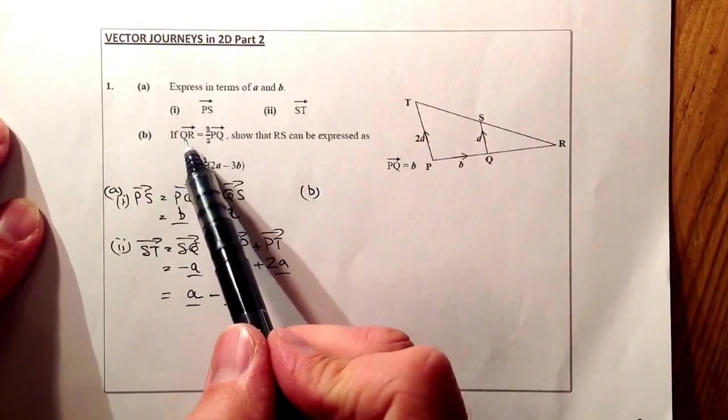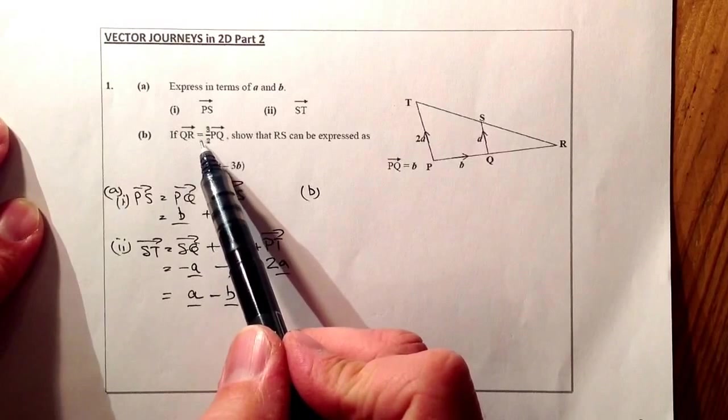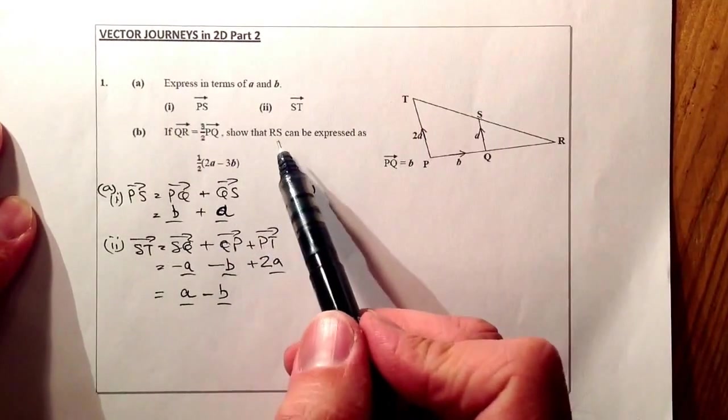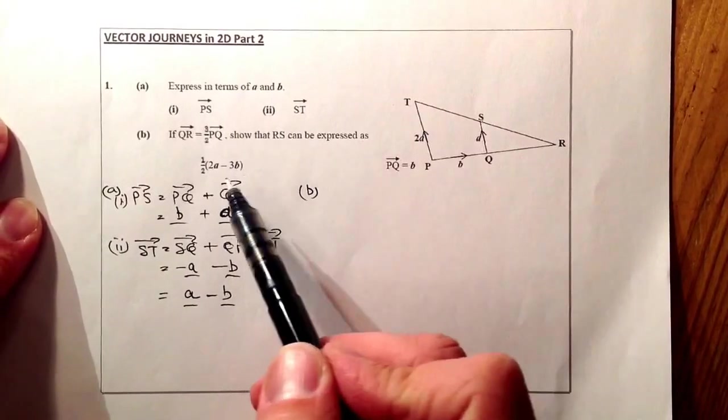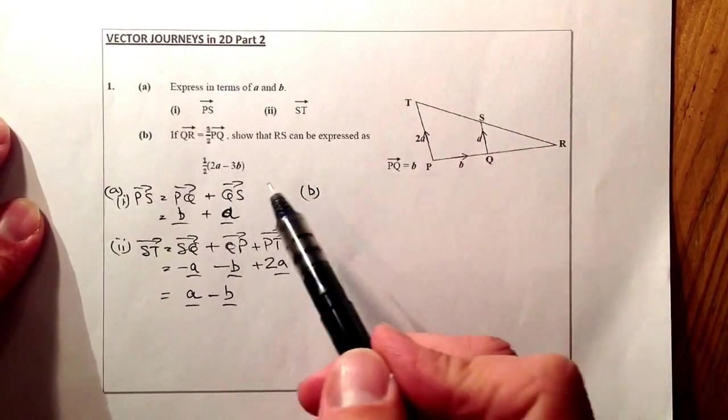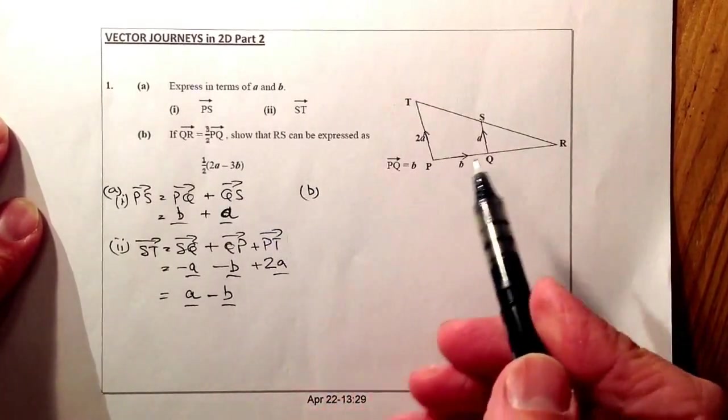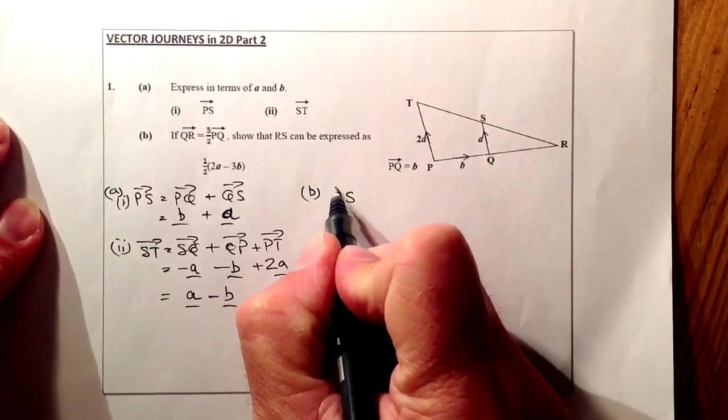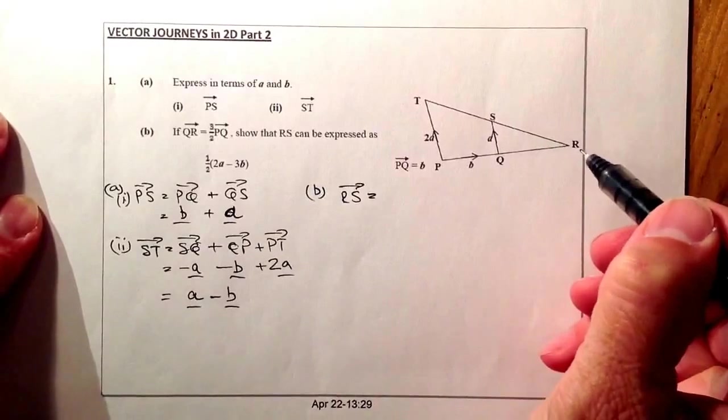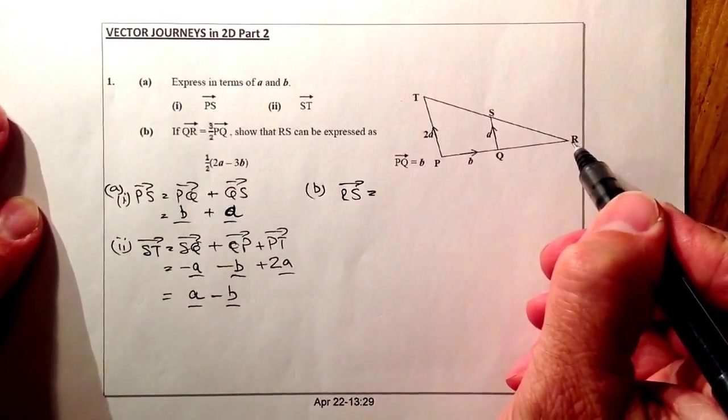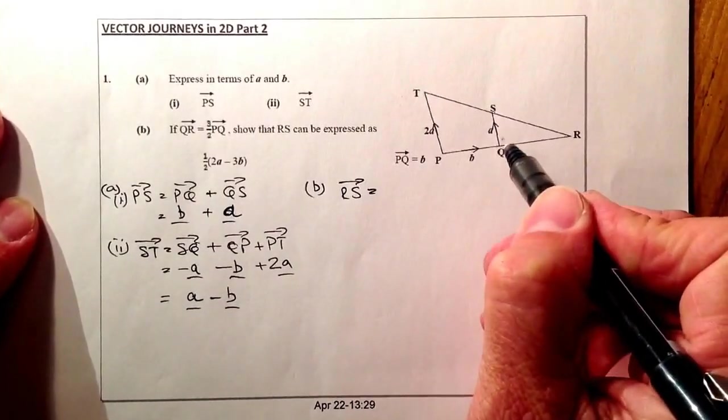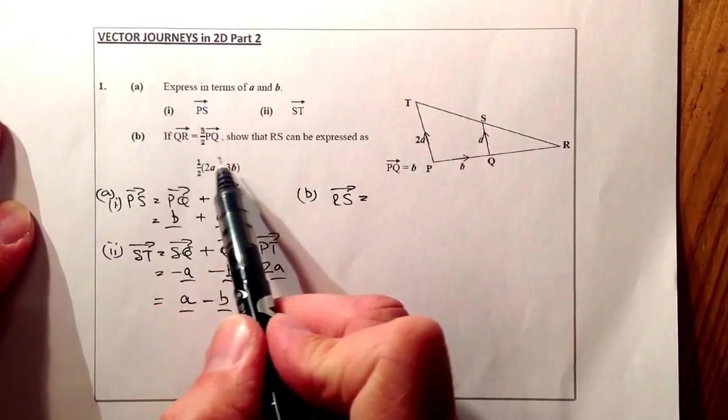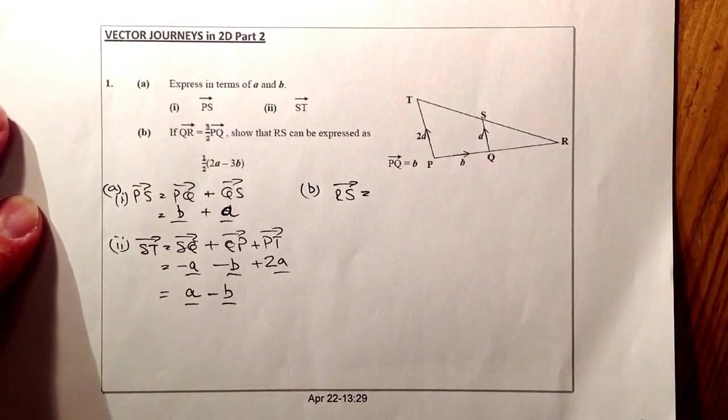Right, for part B, if QR, the vector QR, is equal to 3 over 2 PQ, show that RS can be expressed as a half bracket 2A minus 3B. Right, so let's start with looking at the vector RS. So R to S could be made up by going down this route and up this route here. And from there, I'll be able to gather information from this part here that I've been given.